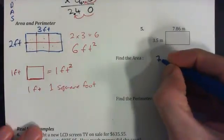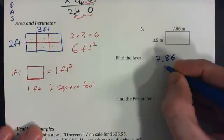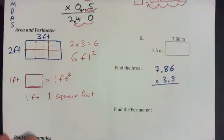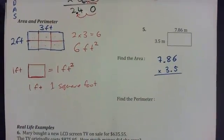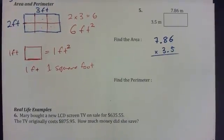To find the area here, we just go 7.86 meters times 3.5 and we just multiply. So can you multiply that and get the answer? See if you can press pause and do that yourself, then I'll do it. Okay, I'll do it now.